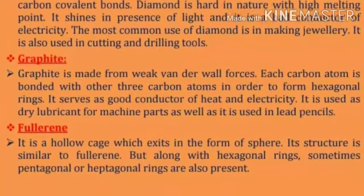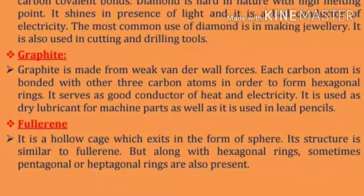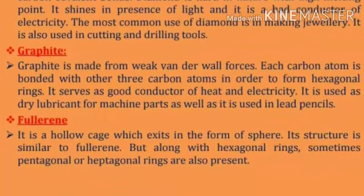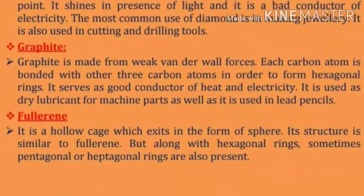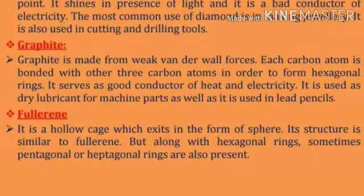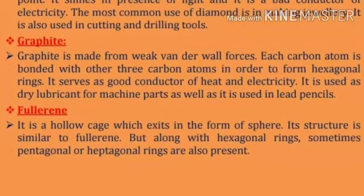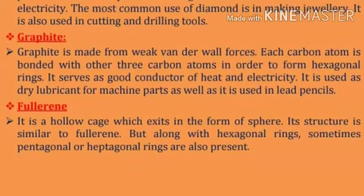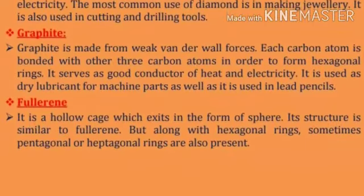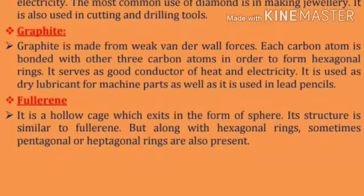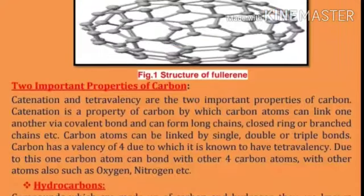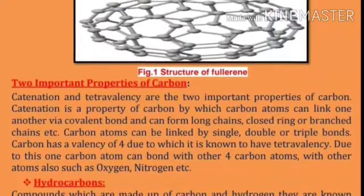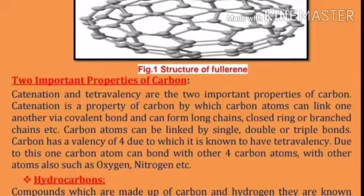Fullerene is a hollow cage which exists in the form of a sphere. Its structure is similar to graphite, but along with hexagonal rings, sometimes pentagonal or heptagonal rings are also present. This is the diagram of the structure of fullerene.